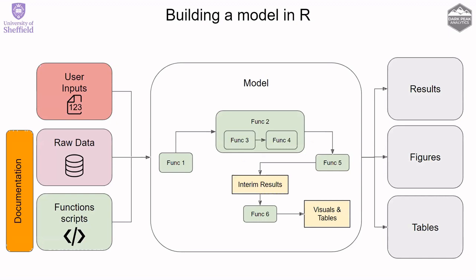You might have user inputs stored somewhere with the defaults, some raw data — patient-level data, costing data, utility data — and then a series of functions or scripts. Your model is essentially just a series of functions which are both sequential, so function one leads into function two, but also nested — function three and four are called by function two. All these functions combined lead to some set of results, and potentially visuals and tables as output.